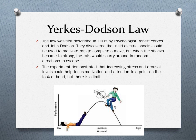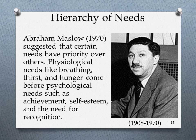The last theory is the hierarchy of needs, looking at the humanistic approach — the cognitive category. Abraham Maslow, 1970, suggested certain needs have priority over others. We're motivated based on a hierarchy. Physiological needs like breathing and hunger must be satisfied first, as the core, before you can seek other levels of motivation.